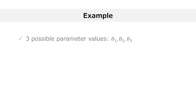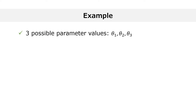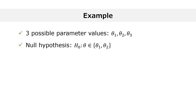Here is a simple example that shows how the power function works. Suppose that there are only three possible values of the parameter: theta 1, theta 2, and theta 3. The null hypothesis is that the true parameter is equal either to theta 1 or to theta 2.